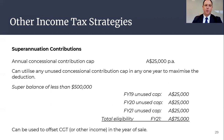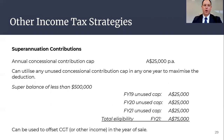Further to this, people with superannuation balances of less than $500,000 who have not utilised their concessional cap from previous years may actually bring forward unused amounts up to the contribution caps. The unused concessional cap can be accumulated over several years and can be triggered in a single year for the full tax deduction. This can be a useful strategy to maximise the deduction of taxable capital gains events.